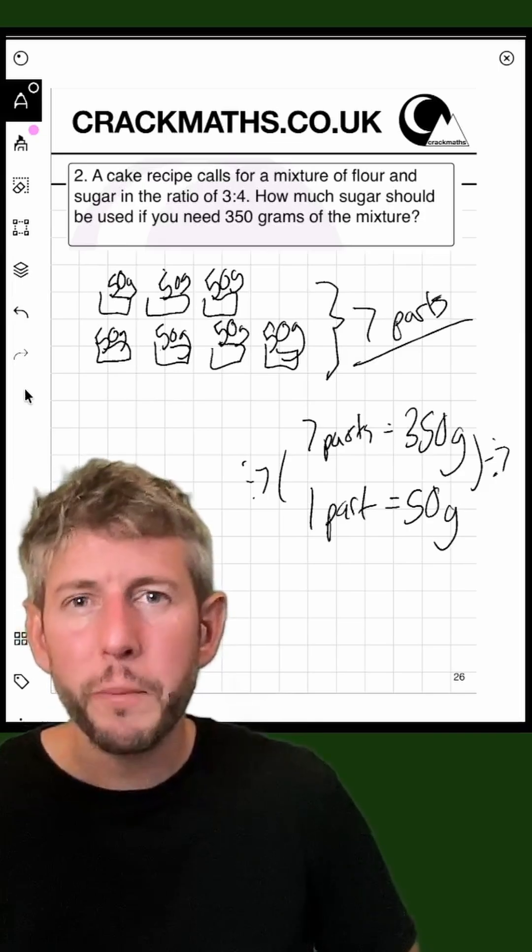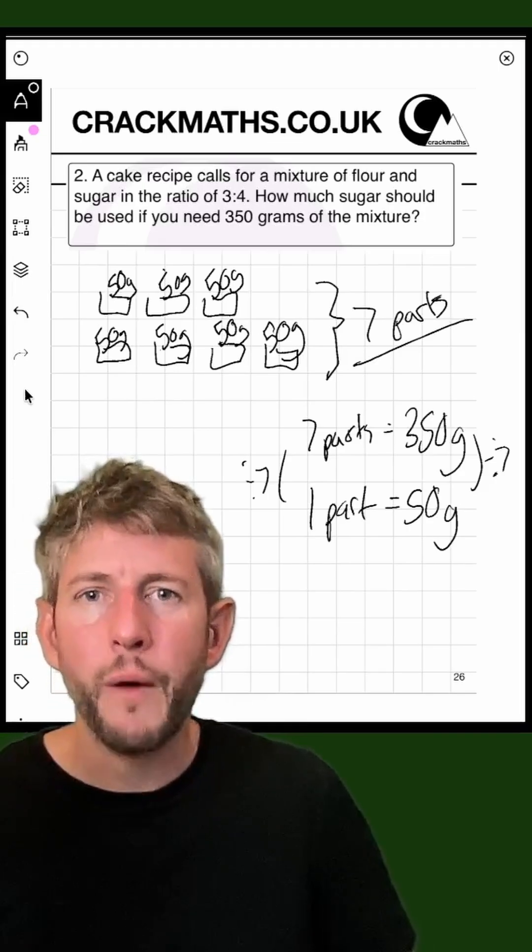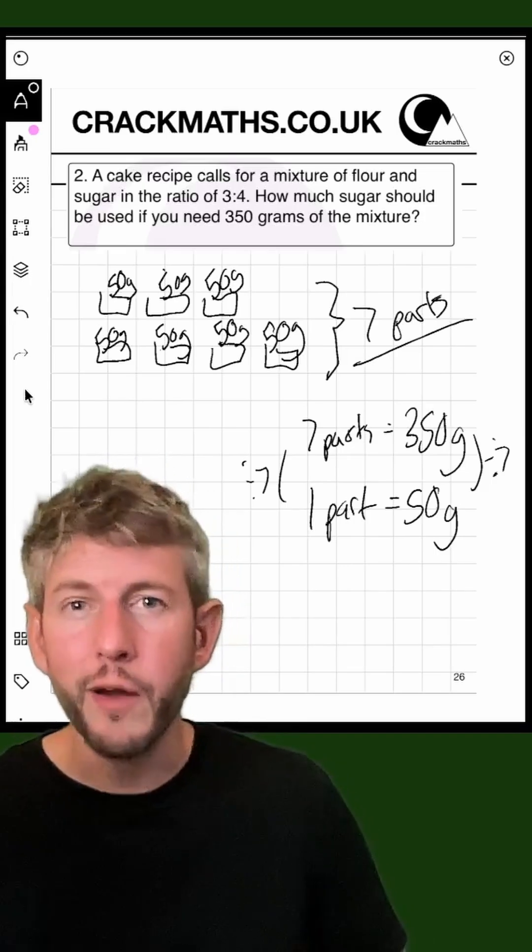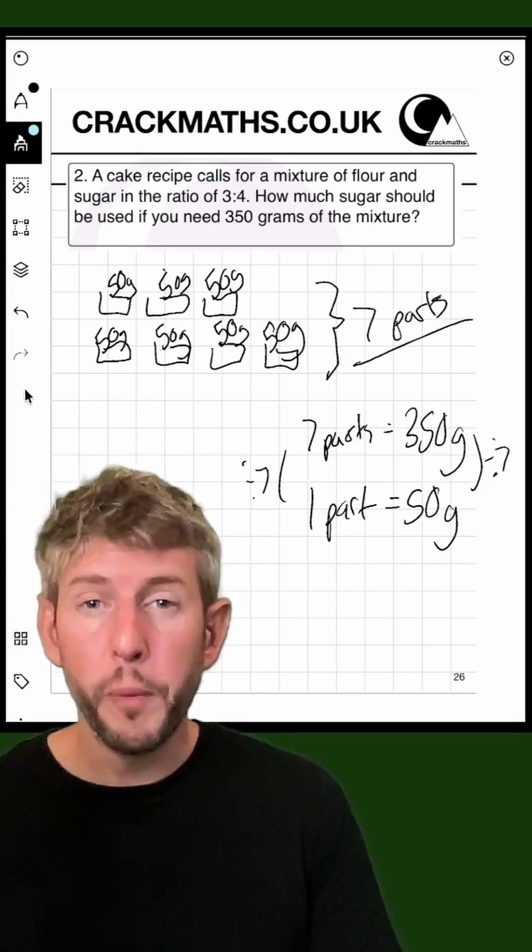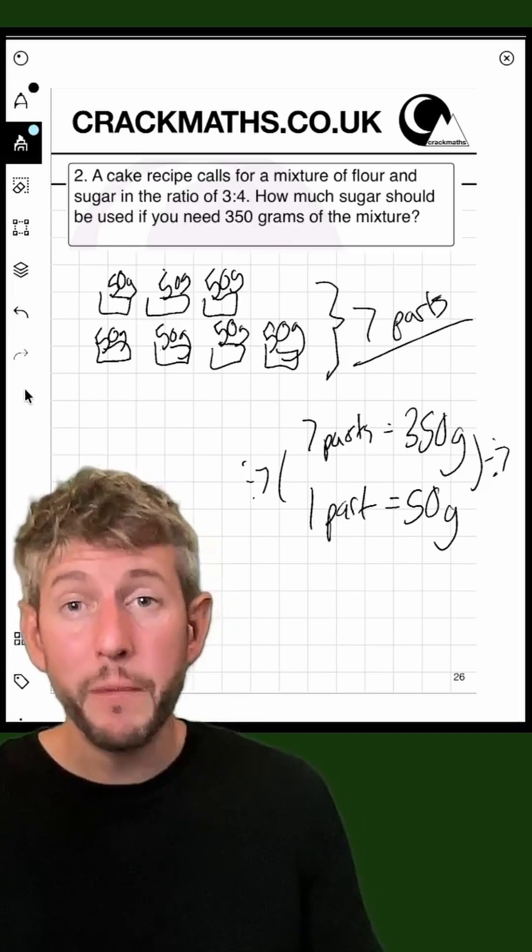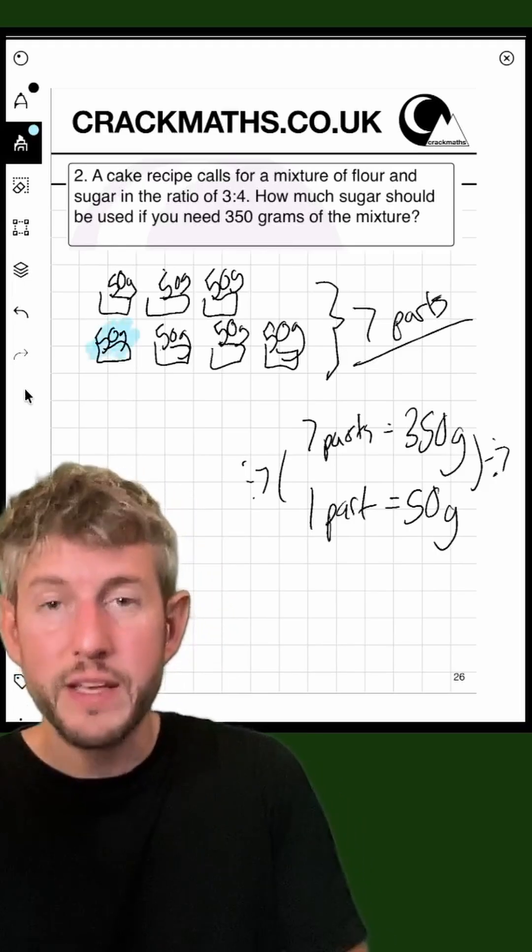Now let's look back to the ratio. The ratio said flour and sugar in the ratio three to four. So that means that sugar is the four part. So if we need to find out how much sugar we need, we can simply count these up.